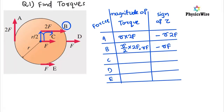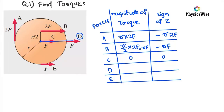Coming to force C, the force and the fixed point are in the same line, so the torque will be zero. Similarly for force D, they are also in the same line, so the torque is again zero.